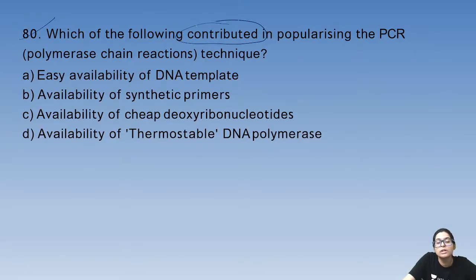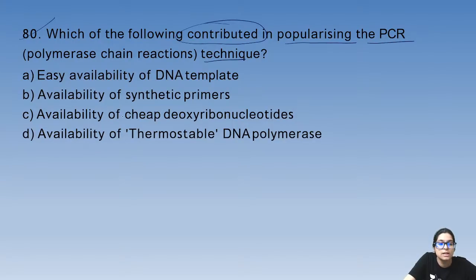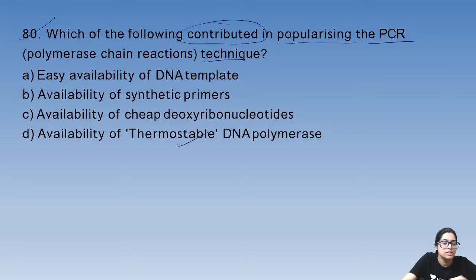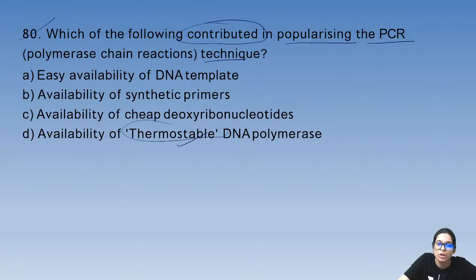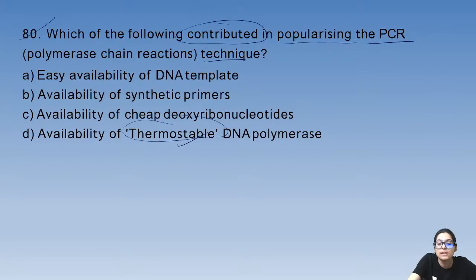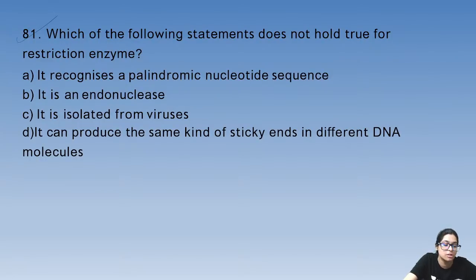Question 80: PCR was popularized when thermostable Taq polymerase was discovered. Without Taq polymerase, PCR would not be possible — because denaturation occurs at high temperatures, and without a thermostable enzyme, the enzyme itself would denature.